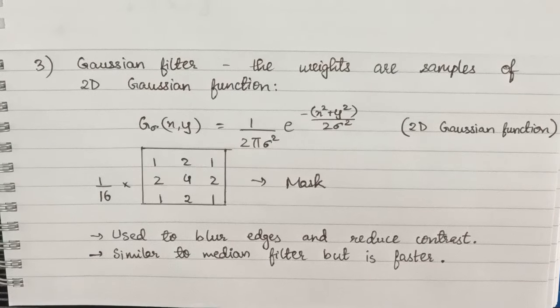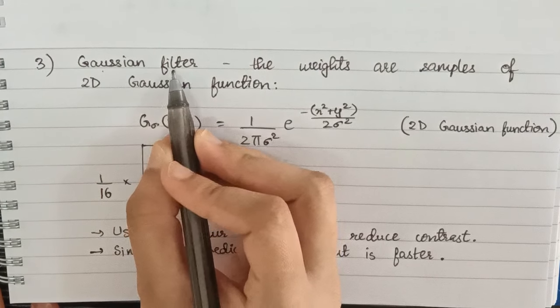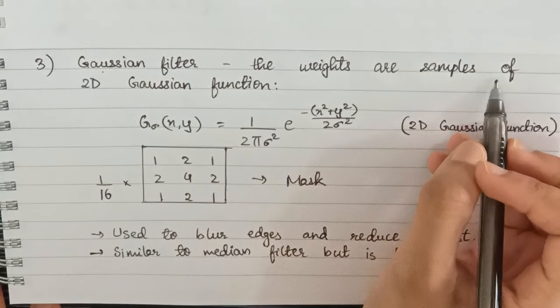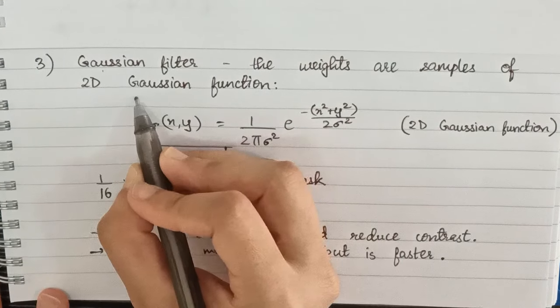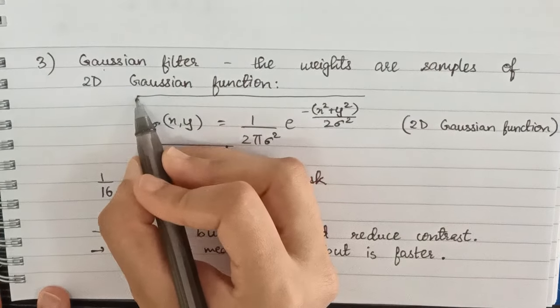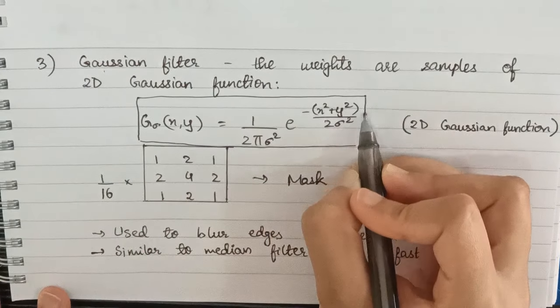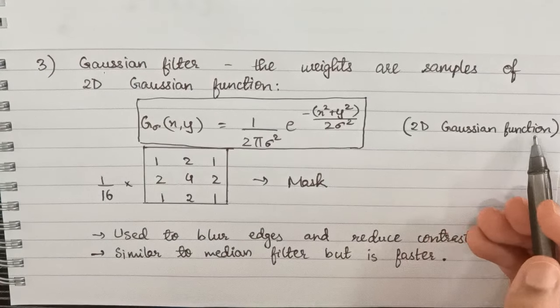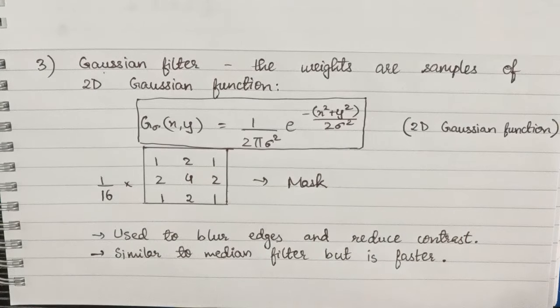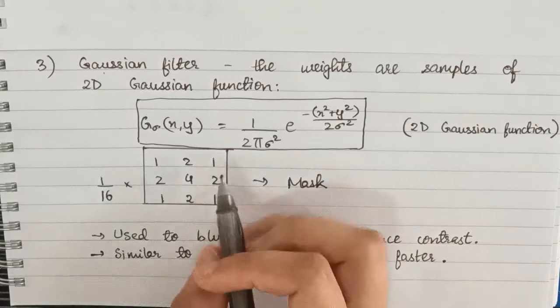The next type of smoothing linear filter is Gaussian filter. Here the weights are samples of 2D Gaussian function. If you look at this function here, this is the 2D Gaussian function. If you check online for Gaussian function you'll find different types, but those will be 1D Gaussian function.